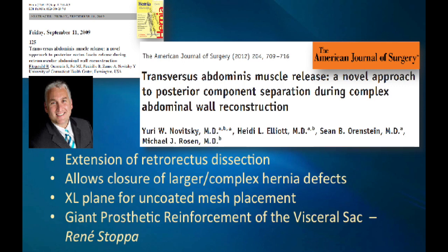Essentially, TAR is an extension of the retrorectus space. It allows closure of larger complex ventral hernias, and it really is an extra-large plane for the use of uncoated mesh. This truly, I think, epitomizes giant prosthetic reinforcement of the visceral sac, as initially described by René Stoppa.